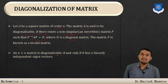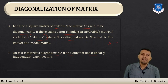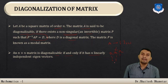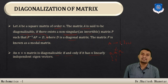An n by n matrix is diagonalizable if and only if it has n linearly independent eigenvectors. For example, if matrix A is of order 3×3 and you get eigenvectors v1, v2, and v3 that are linearly independent — three eigenvectors equal to the order of the matrix — then we can say matrix A is diagonalizable.